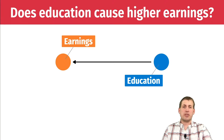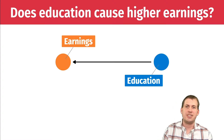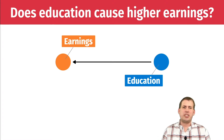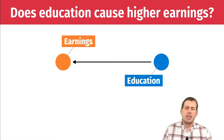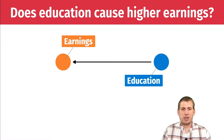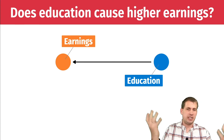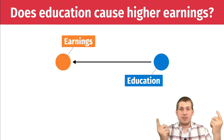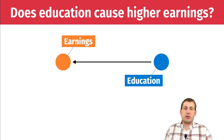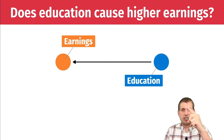We're going to go back to our favorite causal question that we've been looking at throughout the semester — the one all econometricians love. Does education make you earn more money? Does going to college for an additional year make you earn more money over your lifetime? Does getting a master's degree in public policy or public administration help with your earnings? We have a very simple DAG saying education goes to earnings.